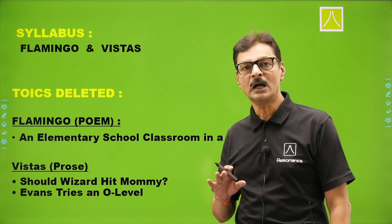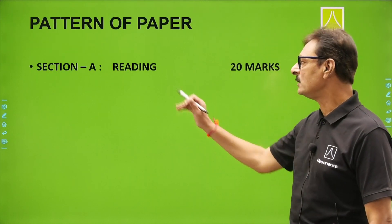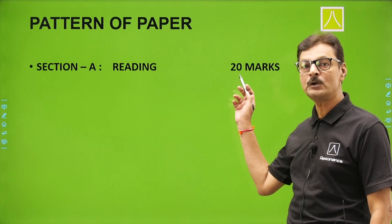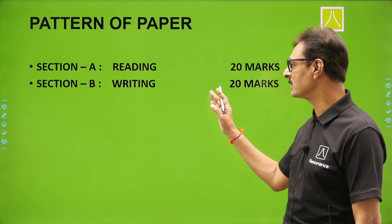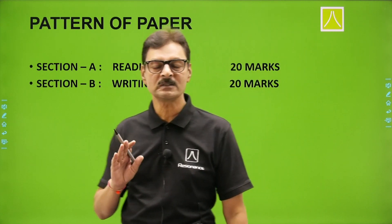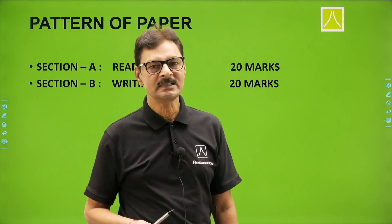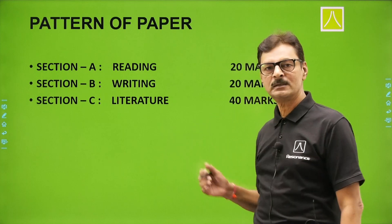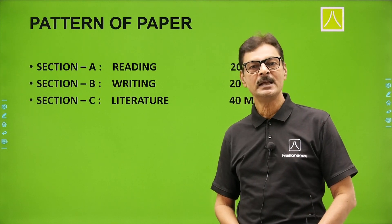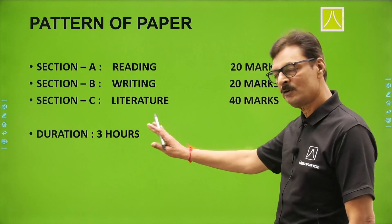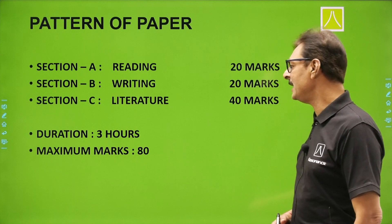There has been some change — kuch badlaav — in the marking scheme and in the pattern of the paper. The reading section, Section A, will be of 20 marks; in the earlier paper it was 22 marks. Section B, writing section, will also be of 20 marks, whereas per the earlier sample paper it was 18 marks. Literature remains the same at 40 marks weightage. Duration is the same — 3 hours — and the paper is for 80 marks total.